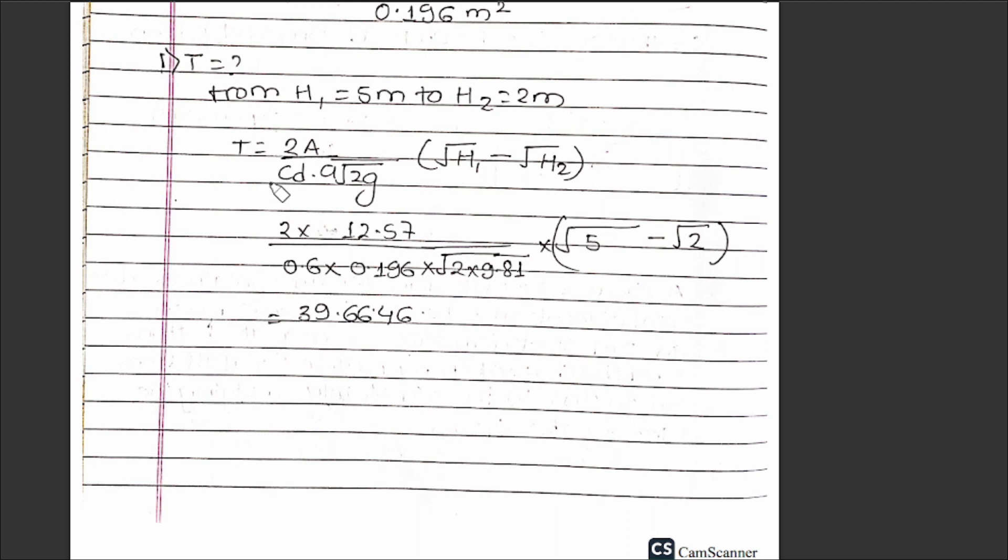Time t = (2 × 12.57) / (0.6 × 0.196 × √(2 × 9.81)) × (√5 - √2). Solving this, the time is 295.66 seconds.